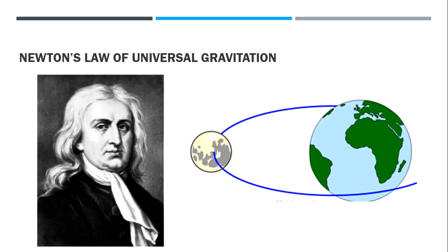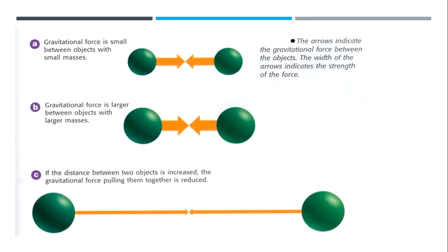Increasing the mass will increase the force, and increasing the distance decreases the force. Gravitational force is smaller between two objects with small masses, but if the objects have a larger mass, the gravitational force is going to be larger. As the distance between two objects is increased, the gravitational force pulling them together is reduced.